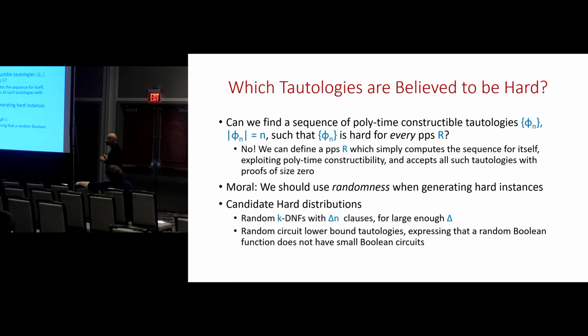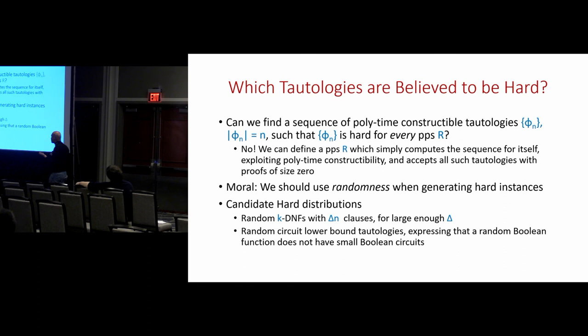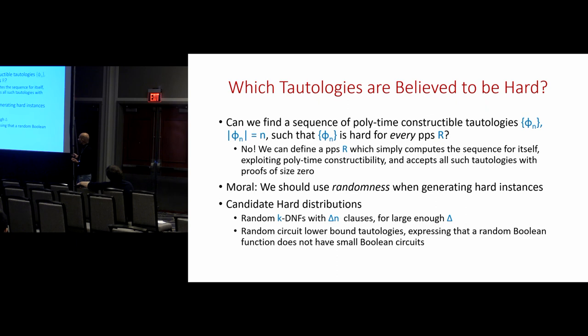It turns out this is impossible. Given such a sequence you can define an artificial proof system R that, given a theorem φ, computes its length, computes the corresponding φ_n in polynomial time, and if φ_n equals φ it just accepts without even looking at the proof. That's a propositional proof system for which φ_n has proofs of length zero. It's a very artificial proof system, but it still counts as a proof system in our sense.